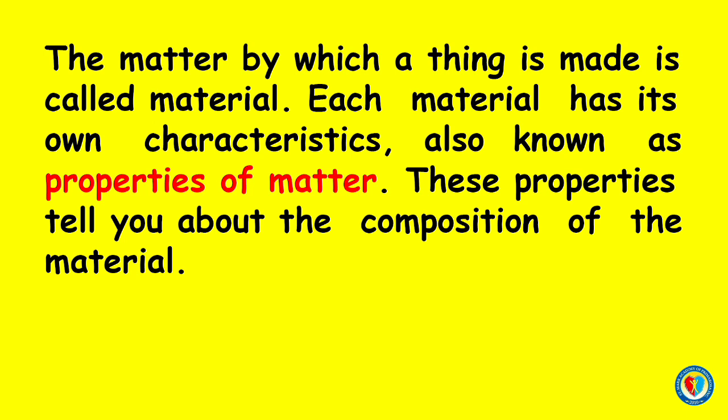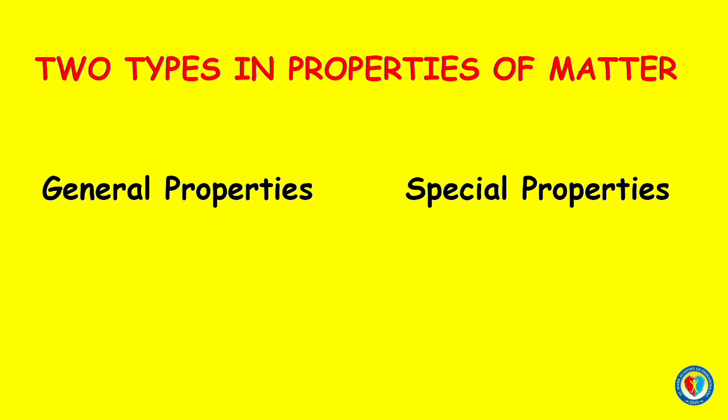Atoms and molecules are so small that they cannot be seen by the naked eye. The matter by which a thing is made is called material. Each material has its own characteristics, also known as properties of matter. These properties tell you about the composition of the material.